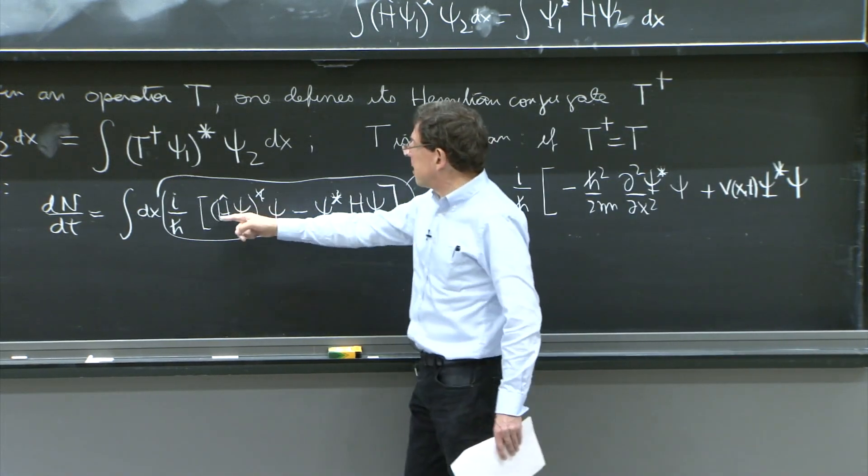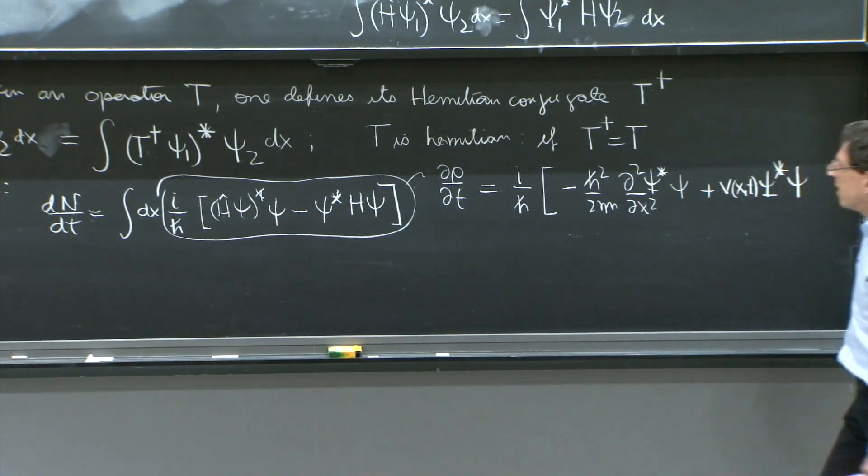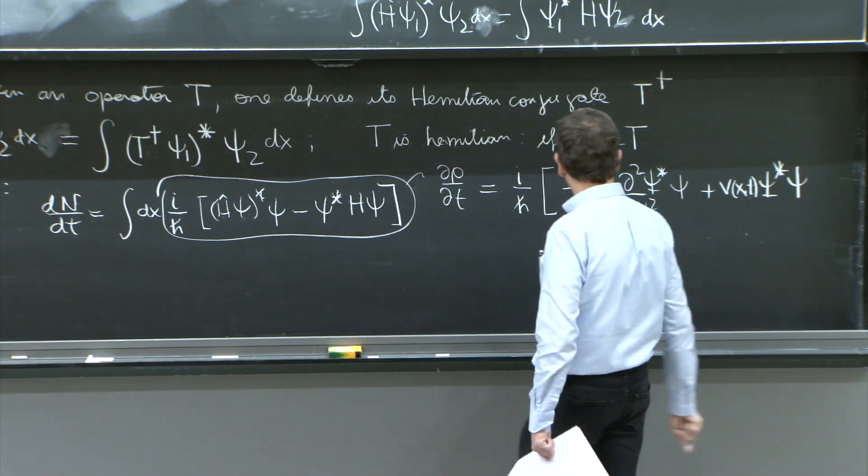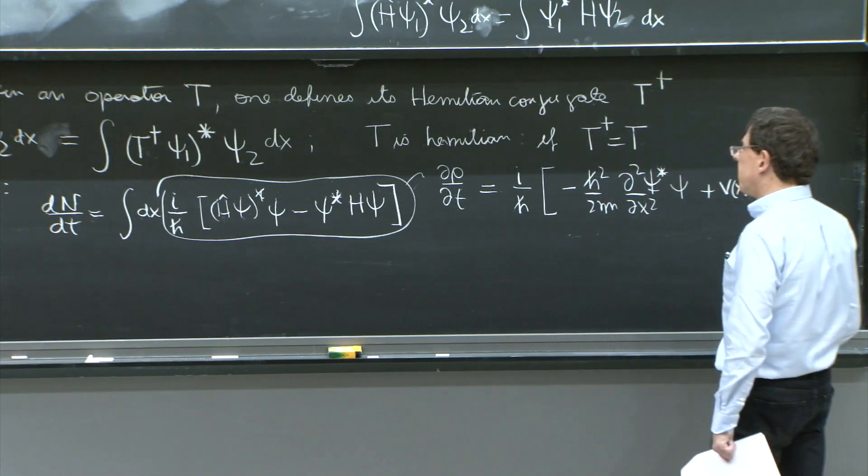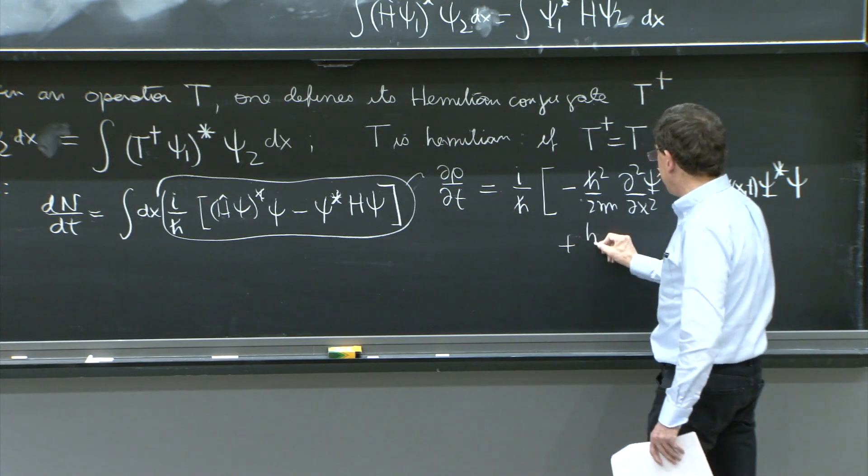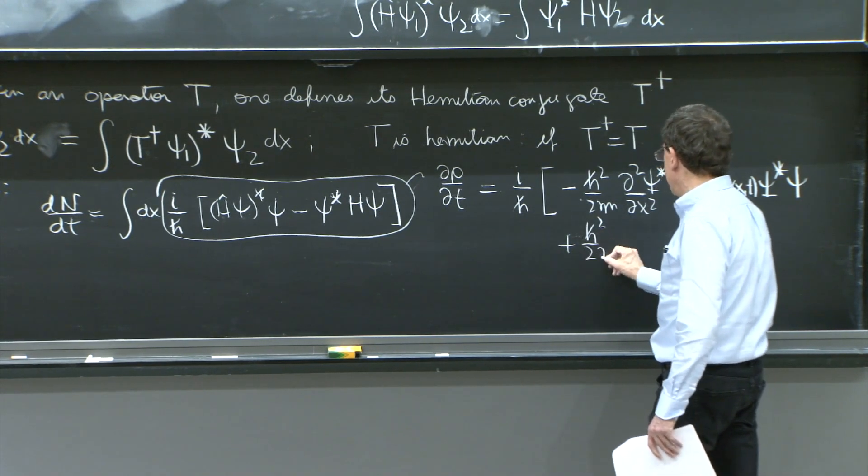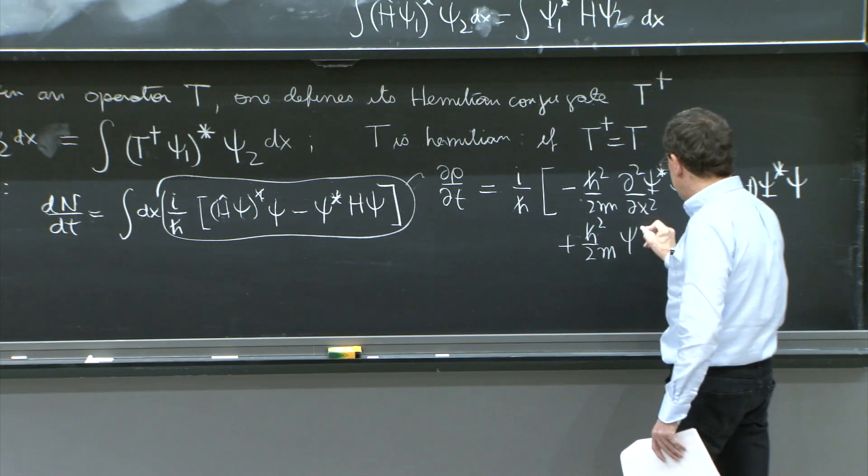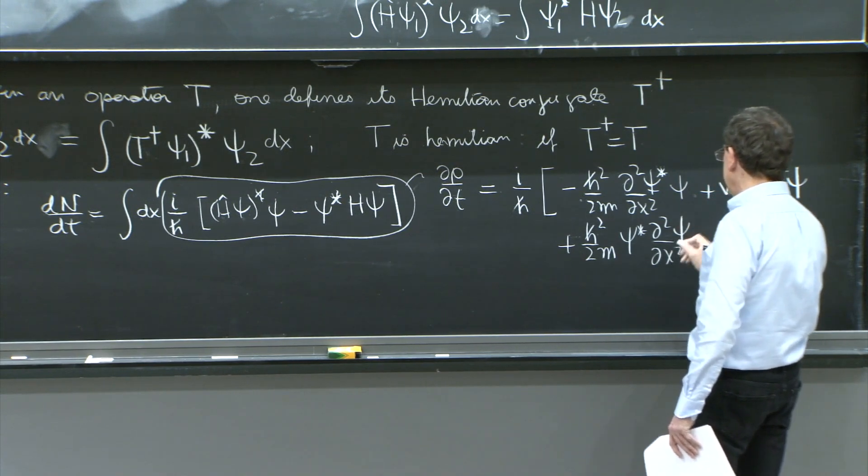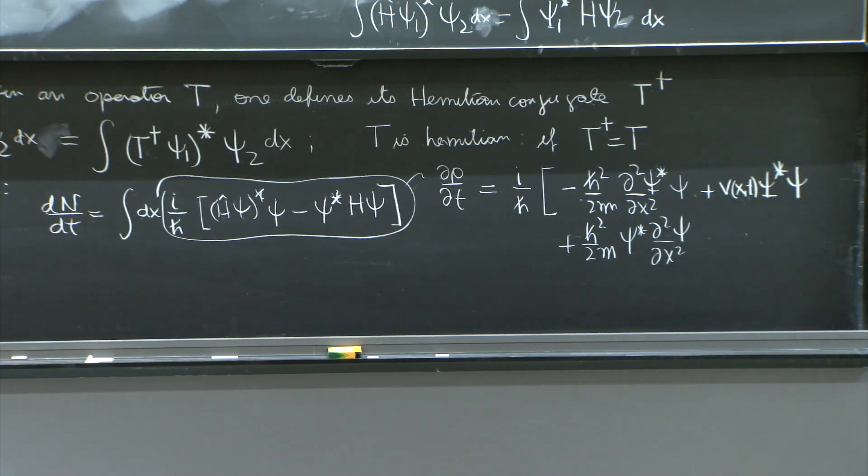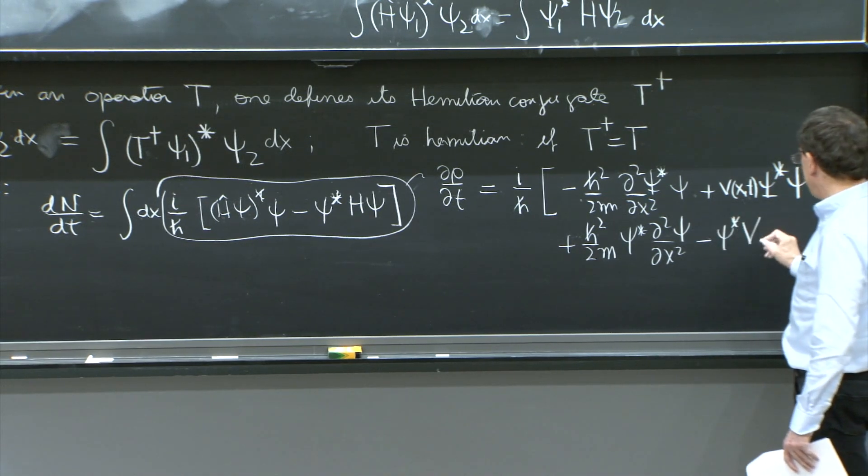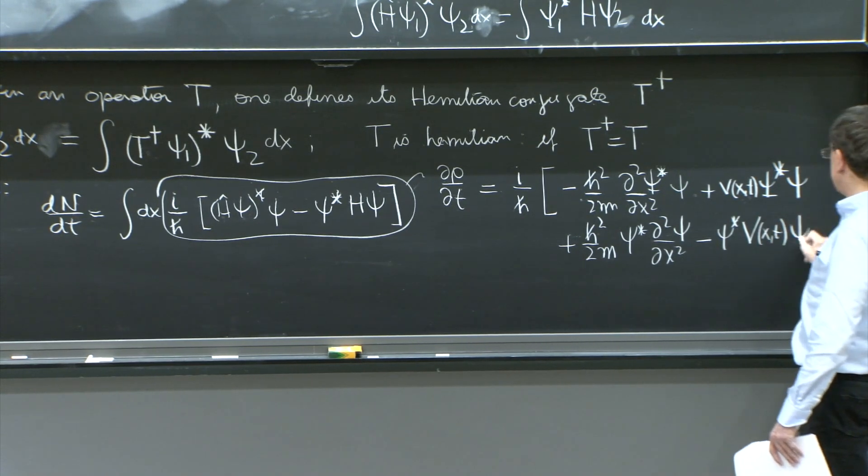V of x and t times psi star times the psi. This other term would be minus psi star H psi. So it's going to be opposite sign to here. So plus h squared over 2m psi star d second/dx squared psi. And then minus psi star V of x and t psi.